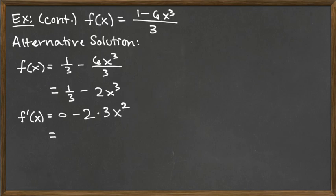And so ultimately we're looking at 0 minus something, so we don't have to have the 0 in there. So we're looking at negative 2 times 3, which is negative 6, X squared, which is what we got when we utilized the quotient rule and simplified our answer.